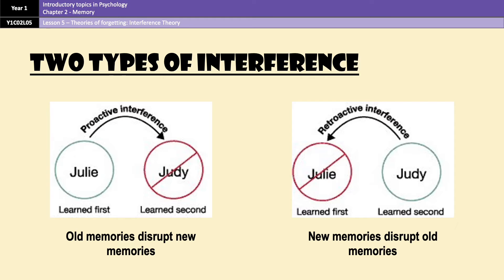There are two main types of interference. Proactive interference is when old information disrupts the recall of new information. For example, calling your new partner by your old partner's name — never a good idea. Or perhaps more relevant: confusing the sociology you revised yesterday with the psychology you're revising today, or confusing the French vocab you revised yesterday with the Spanish vocab you're revising today.